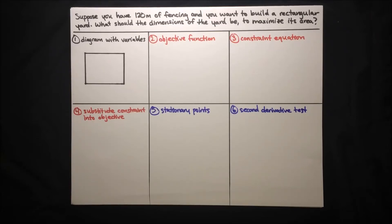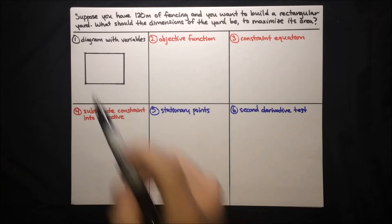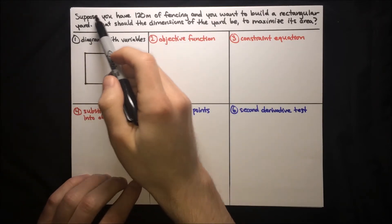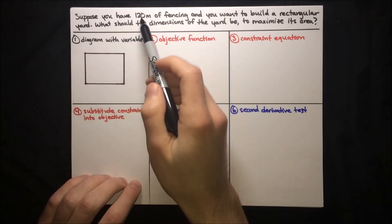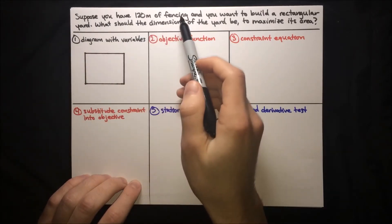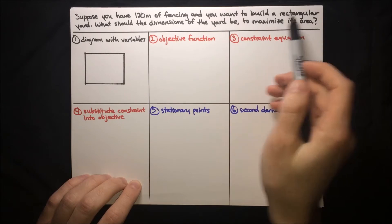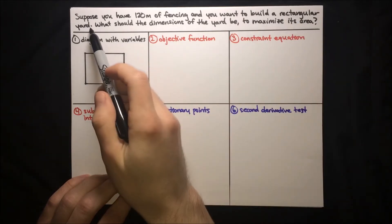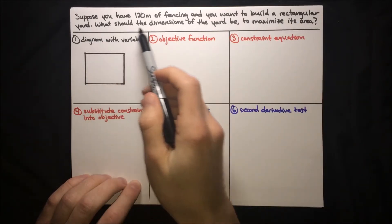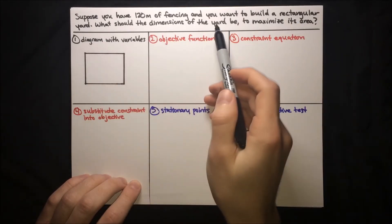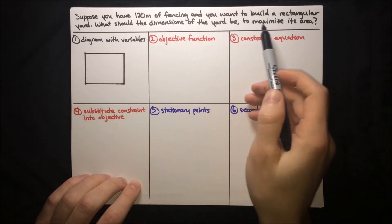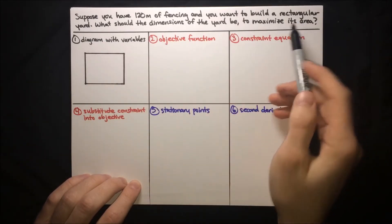In this video, I'm going to show you how to solve optimization problems involving rectangles. Suppose you have 120 meters of fencing and you want to build a rectangular yard. What should the dimensions of the yard be to maximize its area?